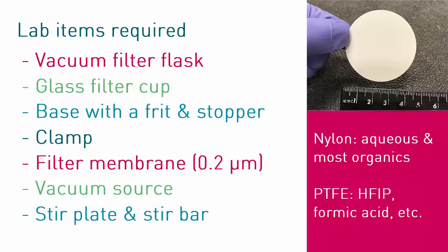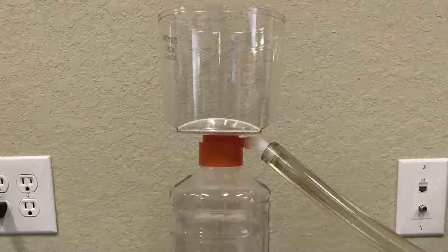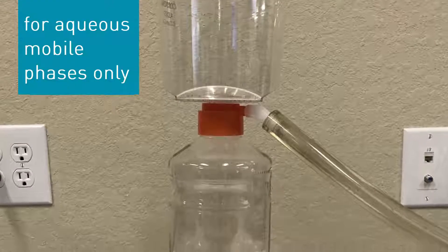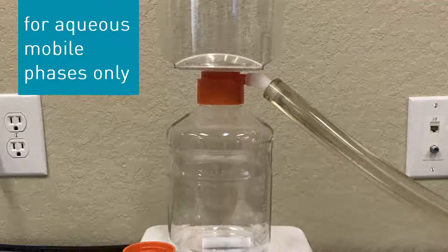The filter membranes should be nylon for aqueous and most organic mobile phases, and PTFE for HFIP, formic acid, and other solvents that will dissolve nylon. Alternately, a disposable all-in-one plastic filtration setup will work for aqueous mobile phases and buffers.